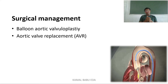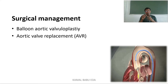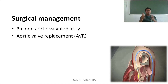Surgical management includes balloon aortic valvuloplasty and aortic valve replacement (AVR). In balloon aortic valvuloplasty, a catheter with a balloon is inserted near the aortic area, placed in position, and the balloon is inflated to widen the aortic valve, re-establishing blood flow. This is the management done for aortic stenosis.